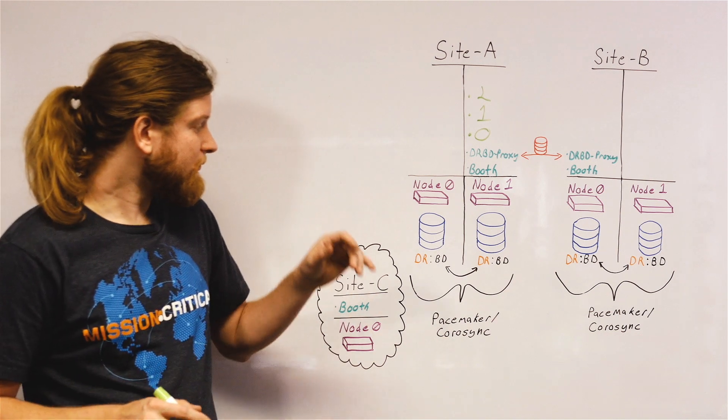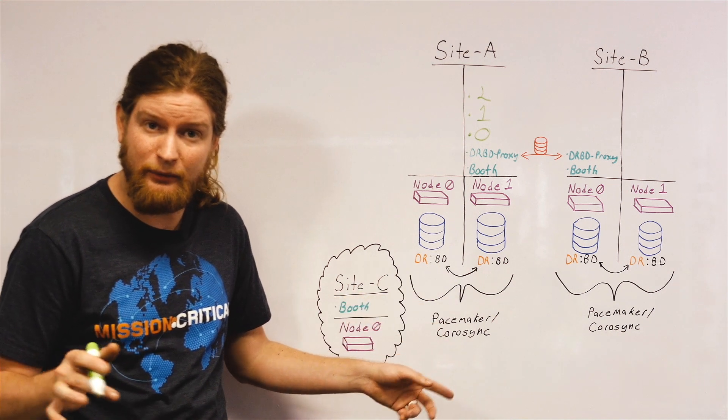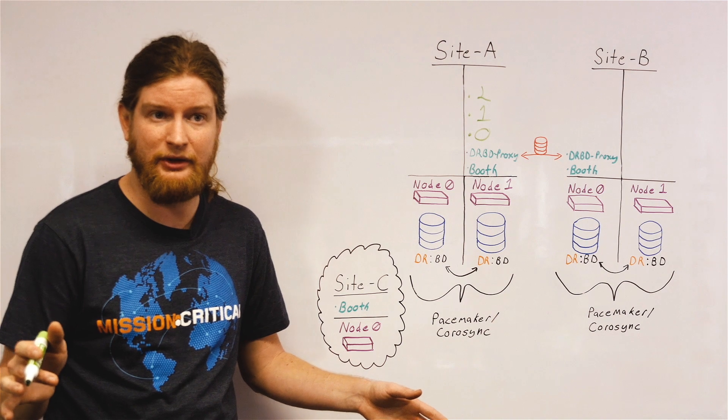So because we're depending on Corosync and Pacemaker in a local cluster, we can't stretch it over a WAN, so we have to use a geoclustering technology.